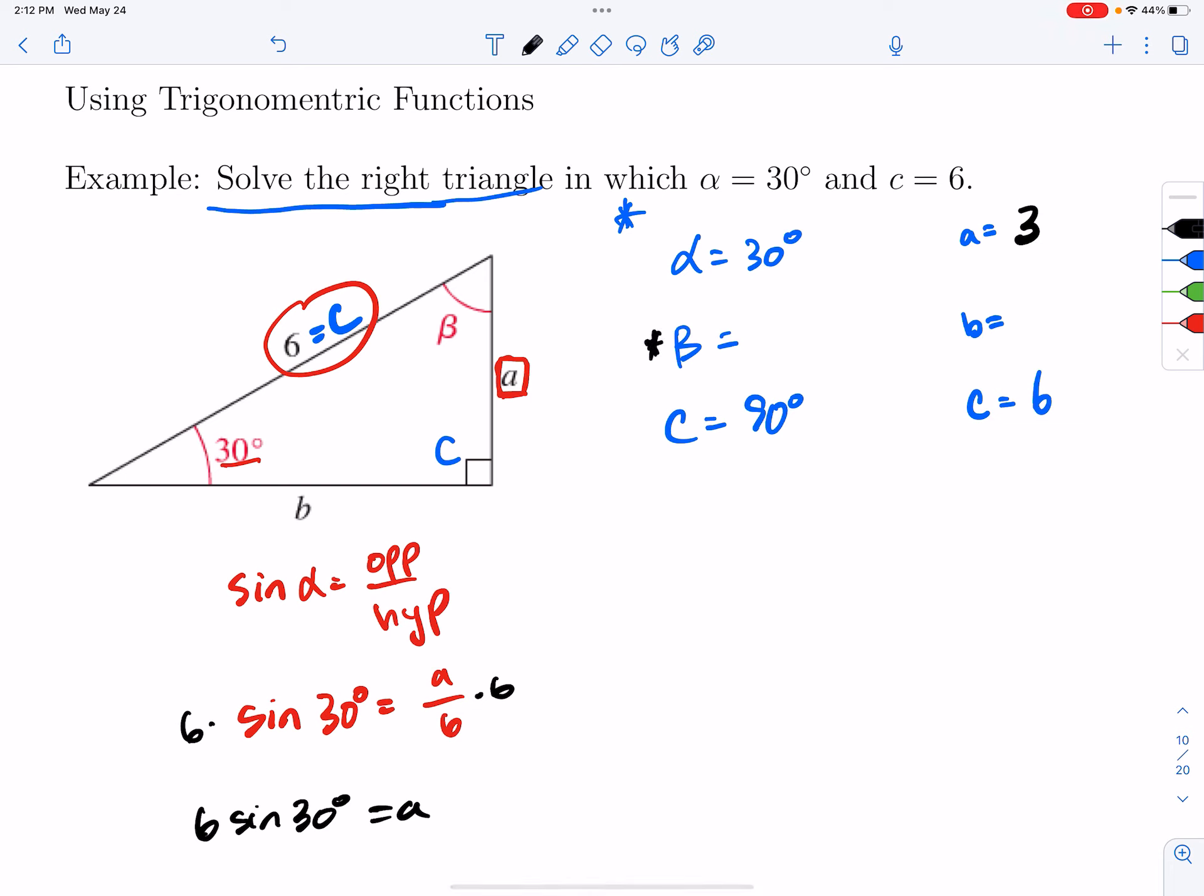Angle beta is pretty easy because all the angles in a triangle have to add up to 180. So if I already have 90 and 30, that means there's 60 degrees left over right here. And then side b, well, at this point, once I have two sides, I can use the Pythagorean theorem. So this will be 3 squared plus b squared is equal to 6 squared. So I get 9 plus b squared is equal to 36. B squared is equal to 27. So b is equal to square root 27 or 3 square root 3.